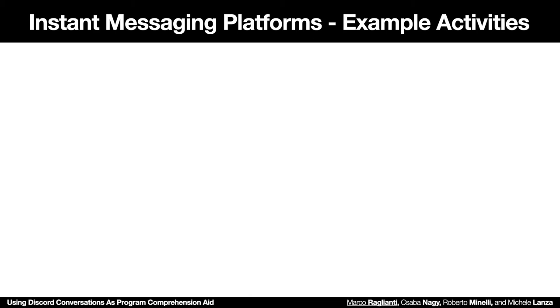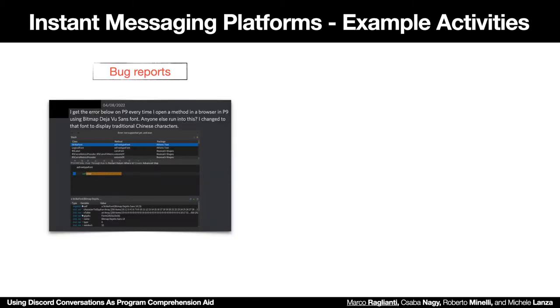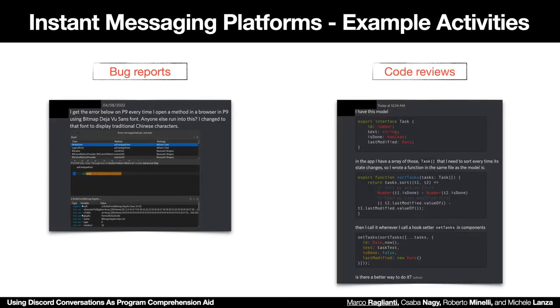Let's start by saying why instant messaging platforms are important nowadays for developer activities. Developers file bug reports on these platforms where, for example, they can link a screenshot and a report of the bug, and ask for immediate clarification about aspects that are not so clear to them. Or they might ask for code reviews by pasting snippets of code and asking people to comment on them or to critique their designs.